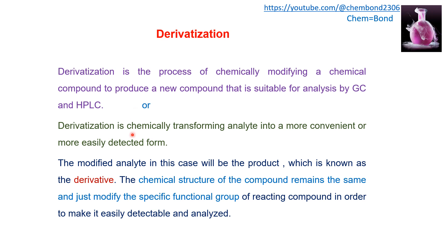In simple words, we can say that we are chemically transforming the analyte into a more convenient and more easily detectable form. The modified analyte in this case is the product known as a derivative. It should be noted that the chemical structure of the compound will remain the same — only a specific functional group in the analyte molecule needs to be modified, while the overall arrangement of atoms in the compound should remain the same.